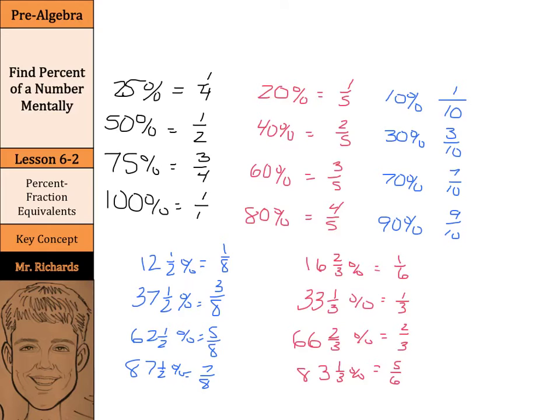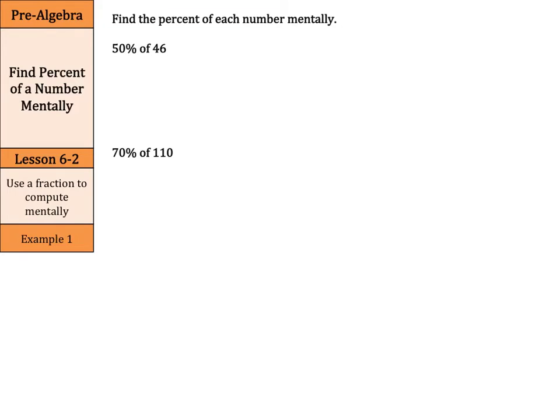Let's use these now to find percents of numbers mentally. So we're going to find the percent of each number mentally, 50 percent of 46. Well, here's how we can think through this. Think using fractions. Our goal is to use fractions to compute these numbers mentally. So 50 percent, when you think of 50 percent, think that this is one half of 46. And what is one half of 46? Well, that is 23.